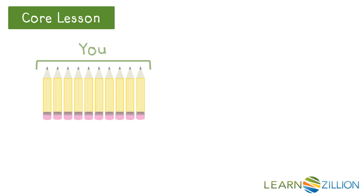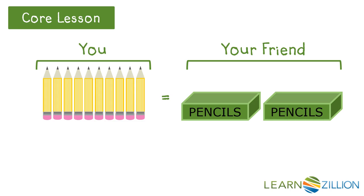Let's look at another example. This time you have 10 pencils, and your friend has 2 identical pencil boxes. Both boxes contain the same number of pencils. How many pencils must be in each box so that you and your friend have the same amount? Again, we could represent this with an algebraic equation. To solve this, we could put pencils into the pencil box and see what works, or substitute values in for x.